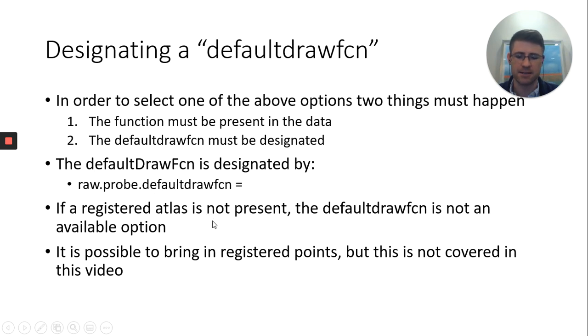And then start typing D, E, and hit tab and see if anything comes up. If it doesn't come up, it's likely that you actually don't have an atlas there. So it is possible to fix this. If you don't have it, you can actually load in registered points into the probe, but I'm not going to cover that here. I'll hopefully have another video on that in the near future.